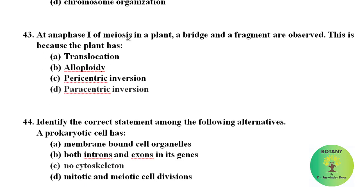At anaphase first of meiosis in a plant, a bridge and a fragment are observed. This is because the plant has a bridge and a fragment is observed at anaphase first of meiosis. It is due to paracentric inversion.